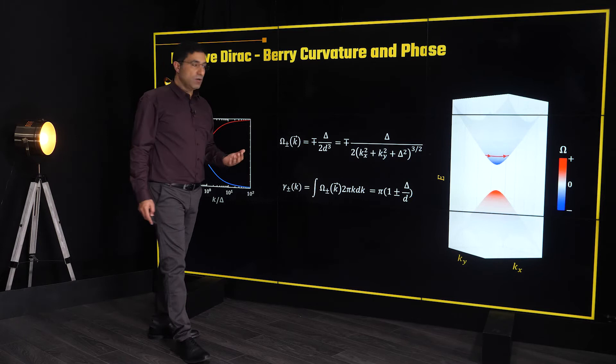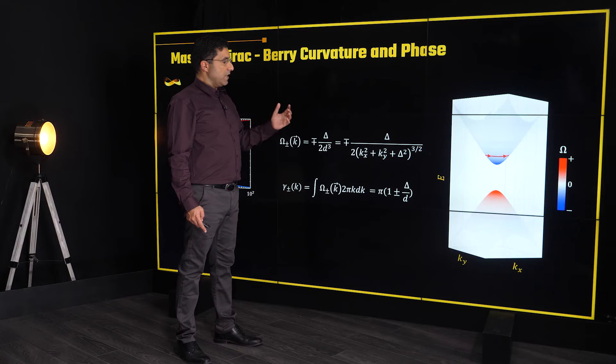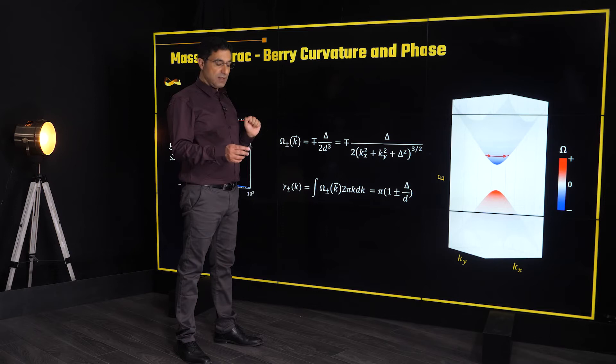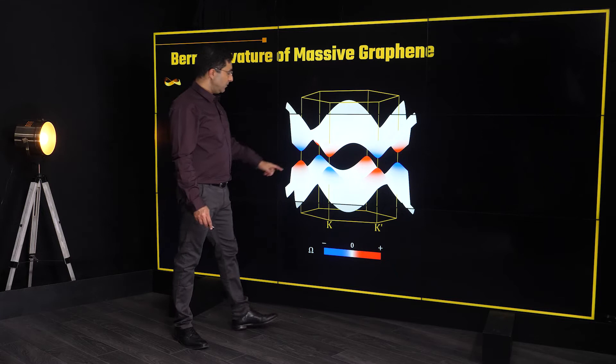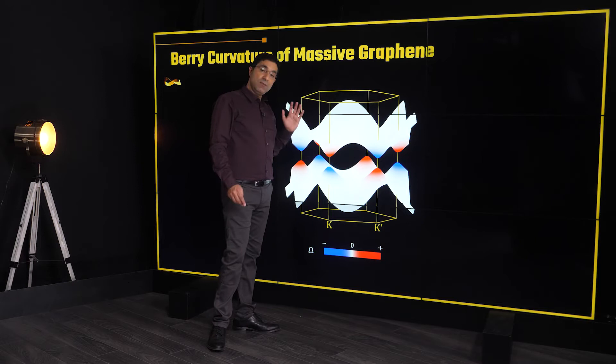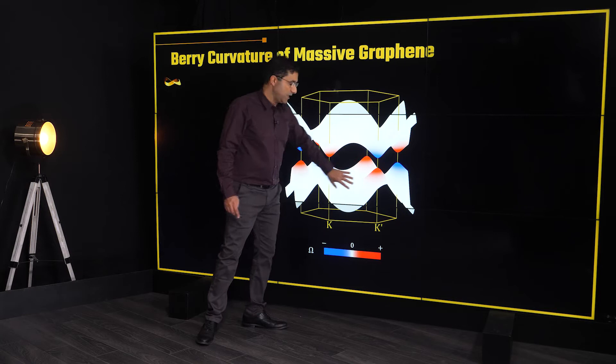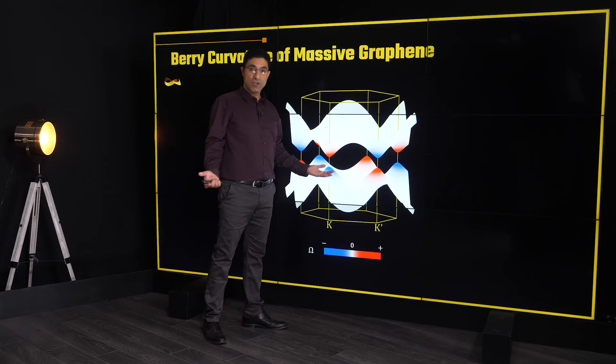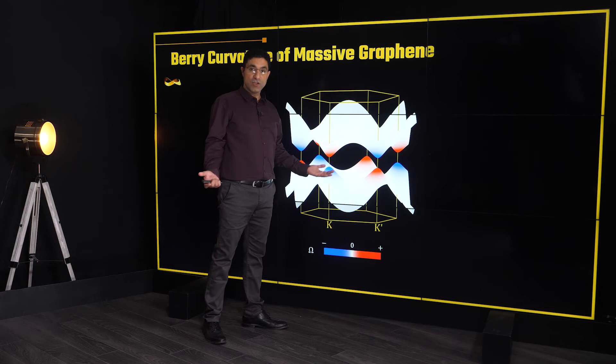Now, looking at how the Berry curvature looks for actual graphene rather than just a synthetic Dirac point: it has opposite sign for the K point and the K' point — blue and red. This means that if we integrate the Berry curvature over the entire band, it cancels out, and the Chern number is exactly zero. So in graphene, the bands are trivial bands.